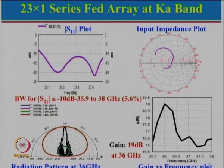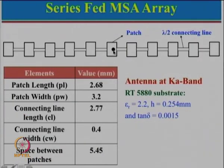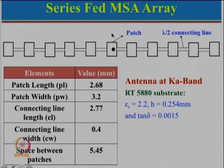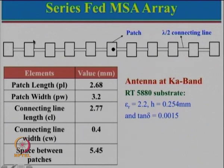Going back to the configuration: when power is fed at the center, it travels both sides. Each patch radiates some power, with the remainder traveling to the next patch. This gives a natural taper distribution - maximum power at center, reducing towards the ends. This non-uniform amplitude distribution is what gives lower side lobe levels.